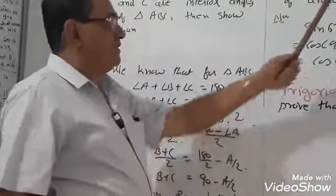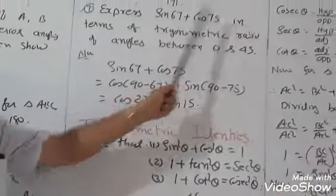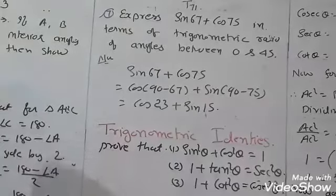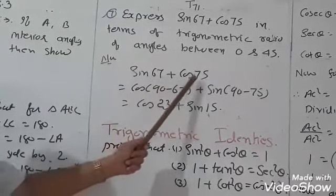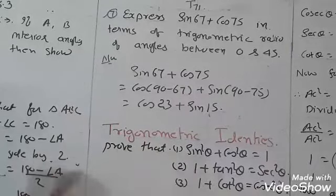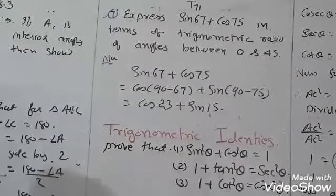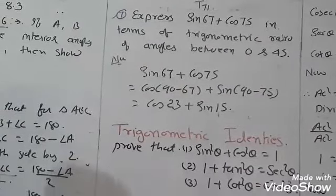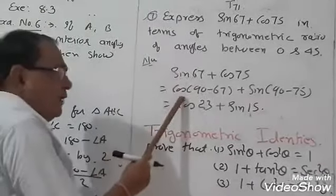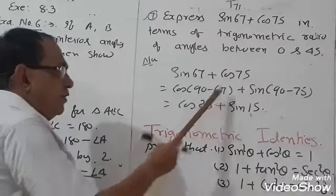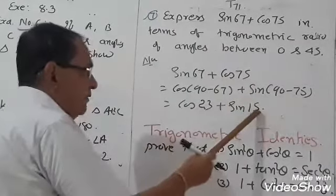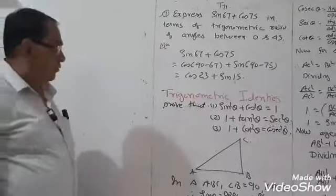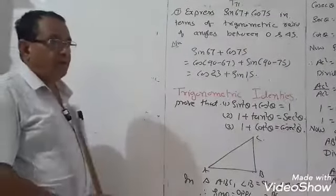Example number 7: Express sin 67° plus cos 75° in terms of trigonometric ratios of angles between 0° and 45°. We change sin 67° to cos(90° minus 67°) which equals cos 23°, and cos 75° to sin(90° minus 75°) which equals sin 15°. This identity is the main part of trigonometry.